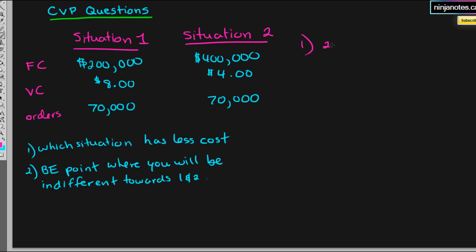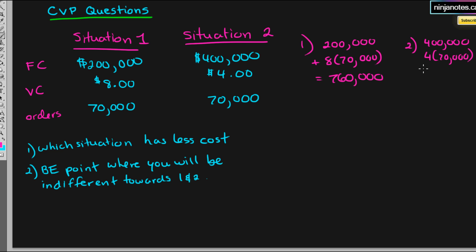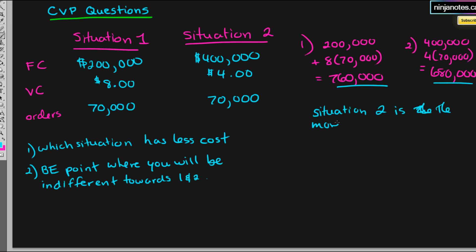All we have to do is find which has less total costs. Situation 1: $200,000 plus 8 times $70,000 equals $200,000 plus $560,000, which is $760,000. Situation 2: $400,000 plus 4 times $70,000 equals $400,000 plus $280,000, which is $680,000. Since $680,000 is less, situation 2 is the more cost-effective of the two.